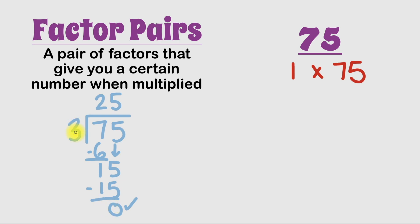So what would our factor pair be? Since we divide 75 by 3 and got 25, this means that our factor pair is 3 times 25.